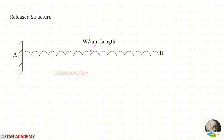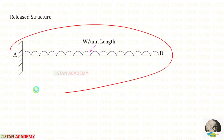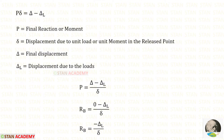Here you can see that I have removed RB. Now the point B becomes a free end. Previously we had a propped cantilever beam, but now it is a cantilever beam. We know the formula to find RB.